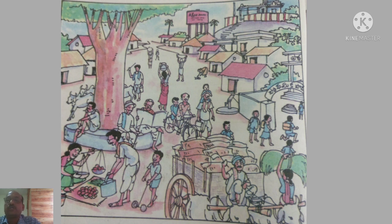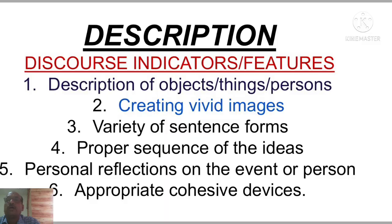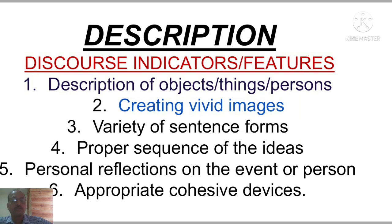Before writing the description of the picture, I will let you know the features of description. The features are the indicators of the description discourse. The first feature is description of objects, things or persons — you have to describe the objects, the things, the persons in the picture. The next feature is creating vivid images — you have to create vivid images in your mind.